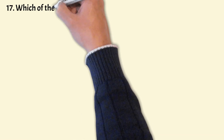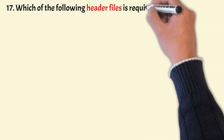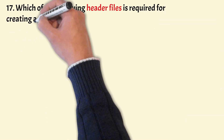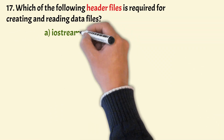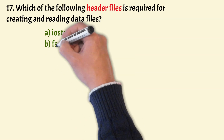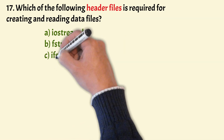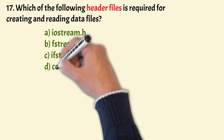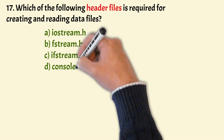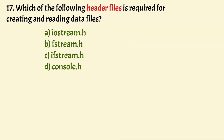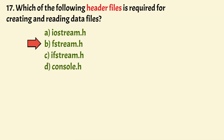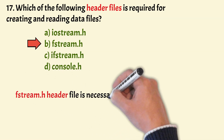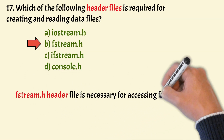Which of the following header files is required for creating and reading data files? The options are iostream, fstream, ifstream and console.h. The correct answer is option B, that is fstream.h. The fstream.h header file is necessary for accessing files.